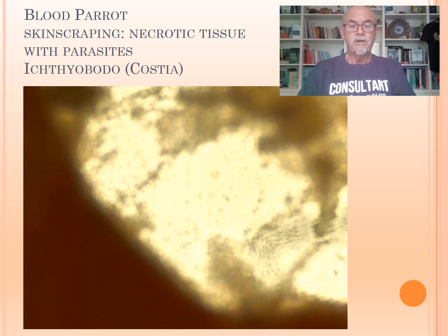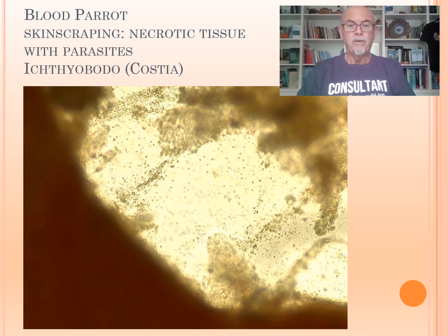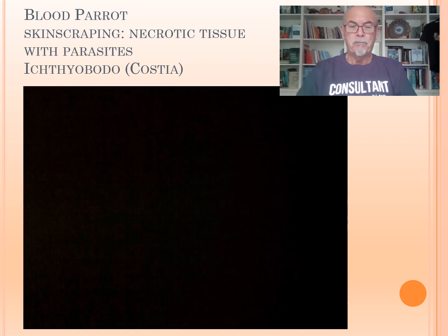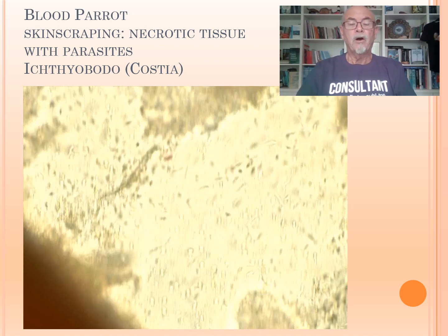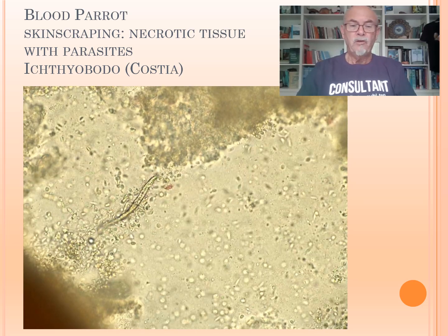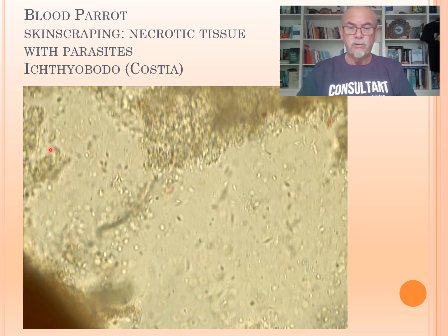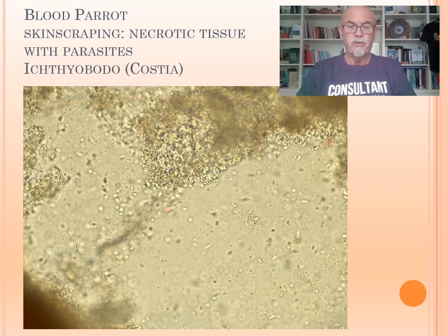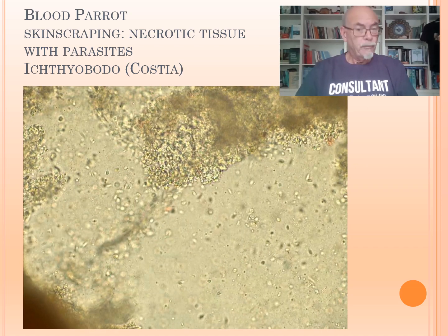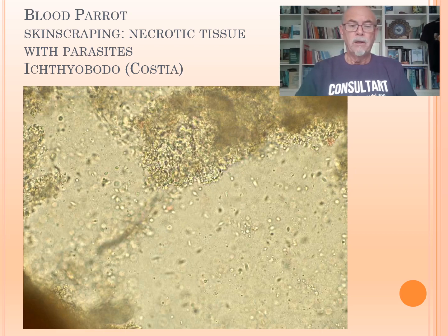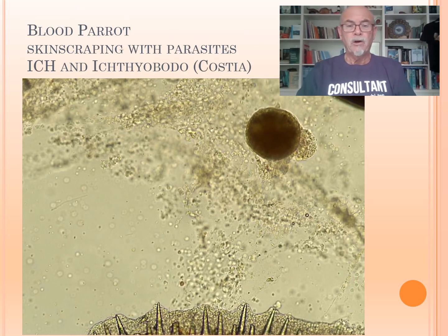And this is what we found in the microscope. Look at the massive amount of parasites — the flagellated parasites Ichthyobodo, or Costia as it used to be called. And this is causing all that necrotic tissue, causing the white lesions which we noticed. Of course, bacteria can invade and have a big impact on the health of the fish, but the parasite was the primary cause.